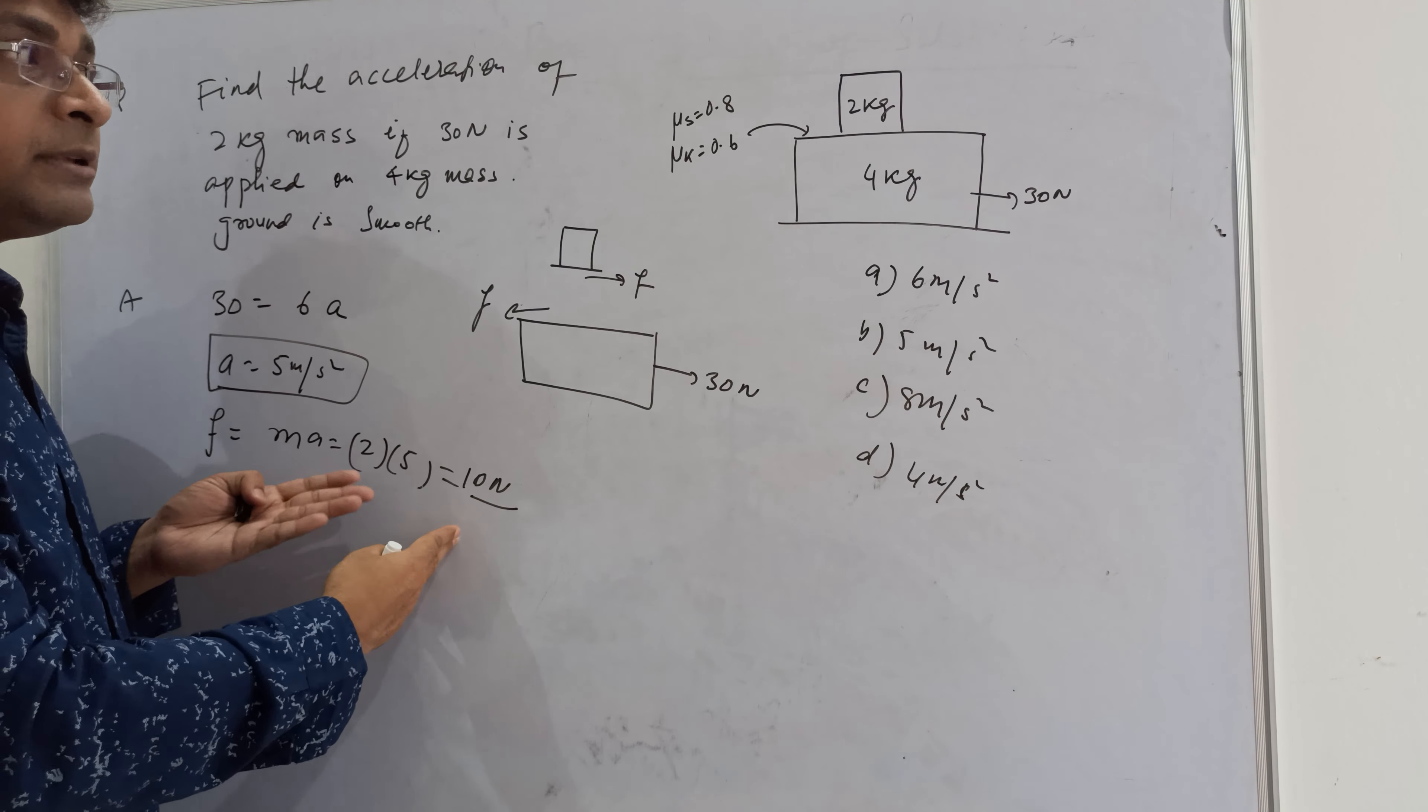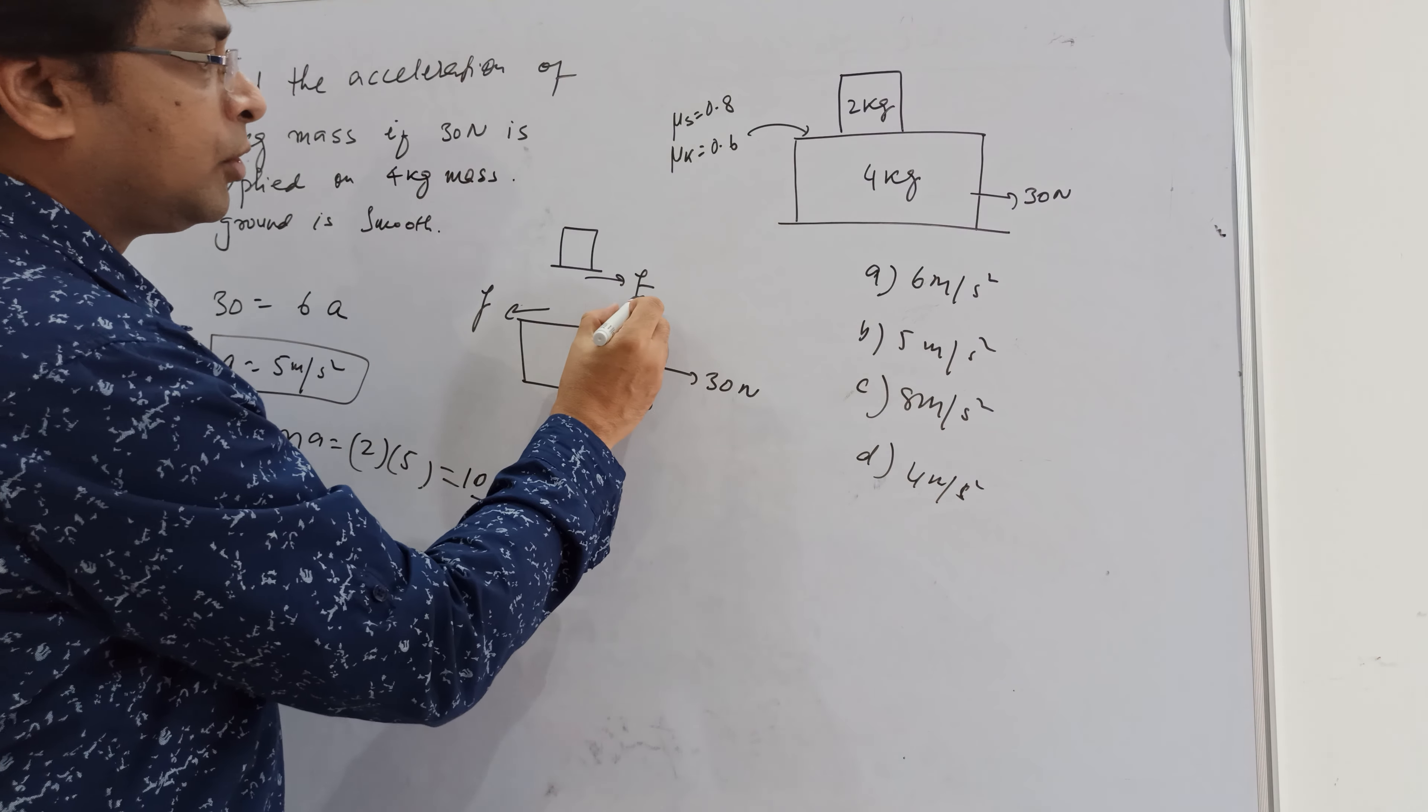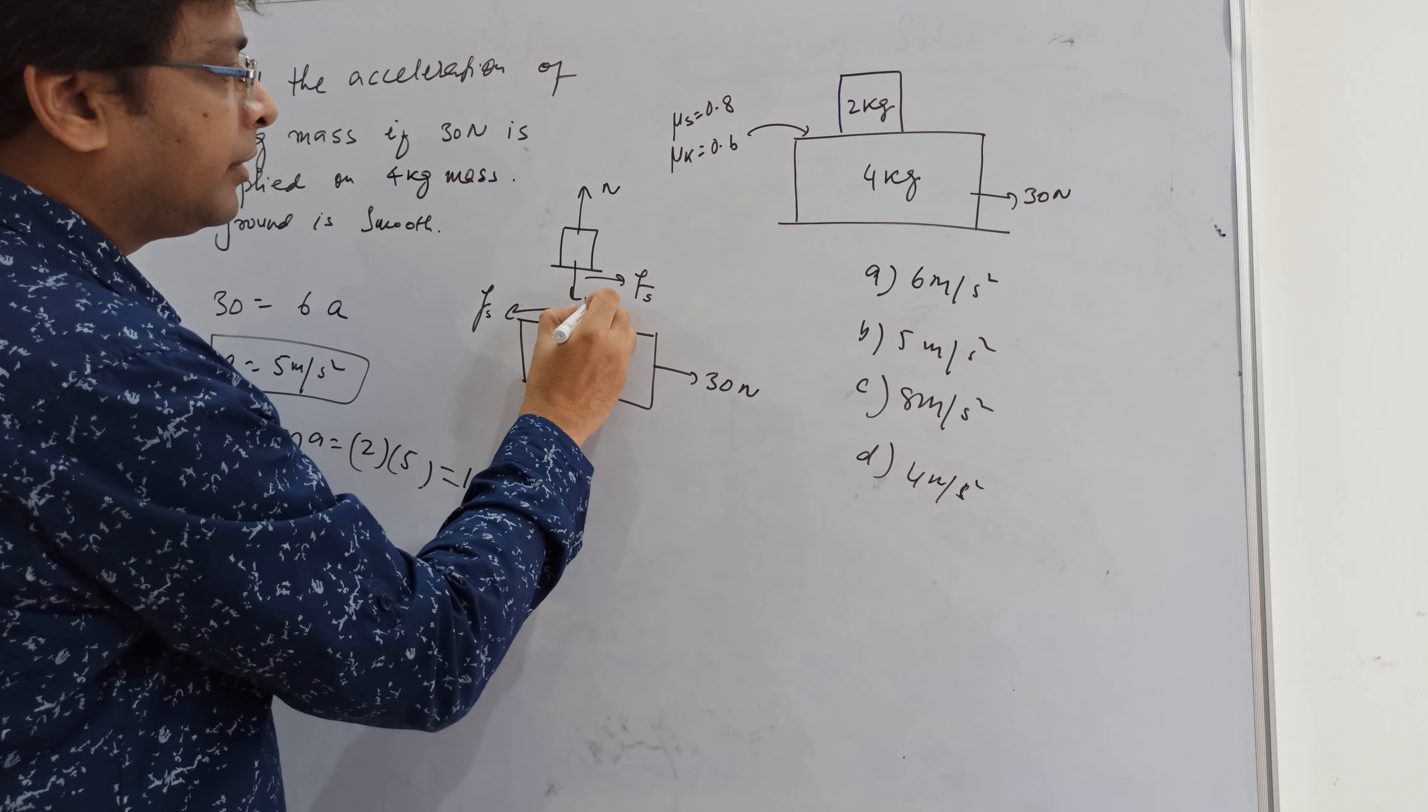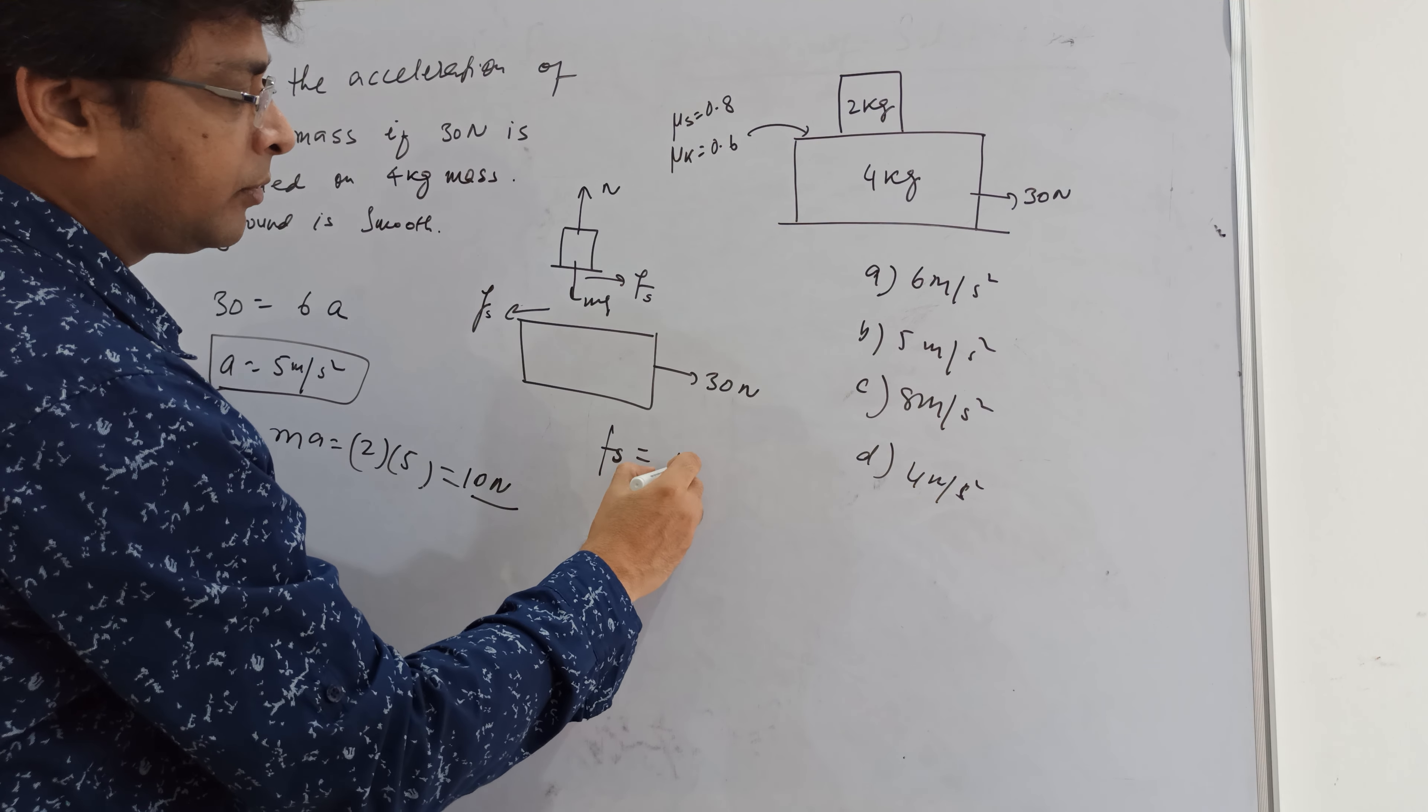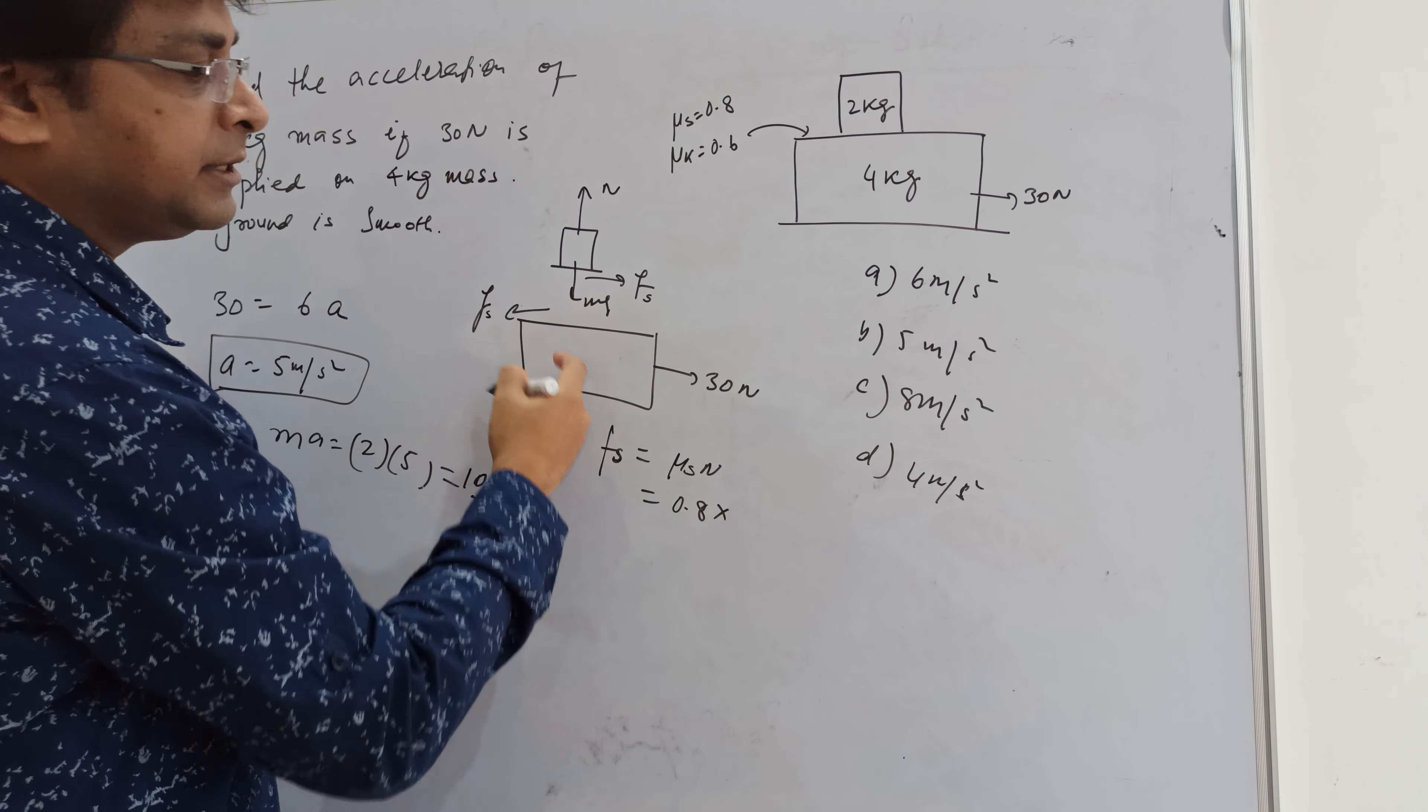So that means our assumption might be wrong. Let's check it out. Maximum friction, which is static friction - this is your N and this is your mg. So limiting friction, maximum friction force, that means μs into N, or μs is 0.8 and N is mg, that is 2g.